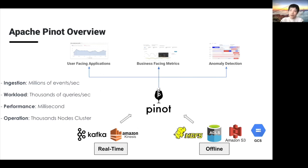On a high level, Apache Pinot is an OLAP datastore built at LinkedIn for low latency analytics. Pinot has been widely adopted in user-facing applications, business analytics, and anomaly detection use cases at more than 35 companies like Uber, LinkedIn, Weibo, Microsoft, and Confluera. When I say low latency, it includes both low ingestion latency and low query latency — Pinot can directly ingest data from Kafka or Kinesis and those events are queryable immediately. Users can also batch-load data using Hadoop or Spark from blob stores like HDFS, S3, or Azure Data Lake. In production, Pinot handles ingesting millions of events per second and serving thousands of queries per second with millisecond-level query latency. Our largest deployment is about 1,000 nodes, operated by only one or two SREs.